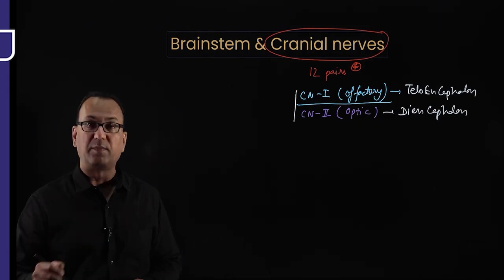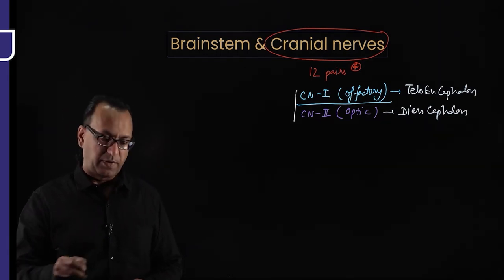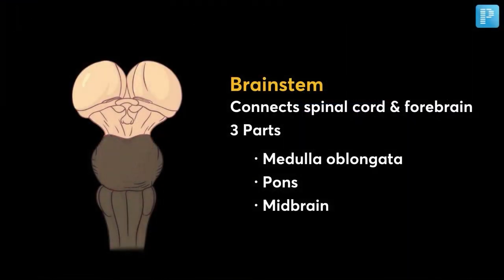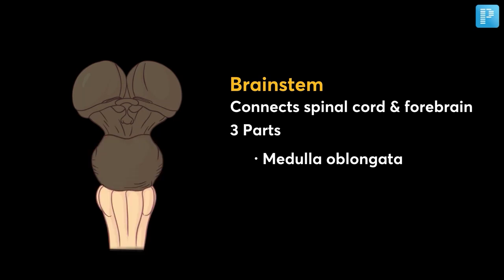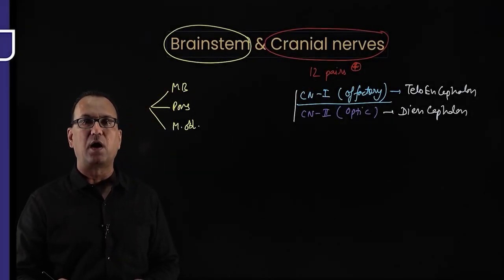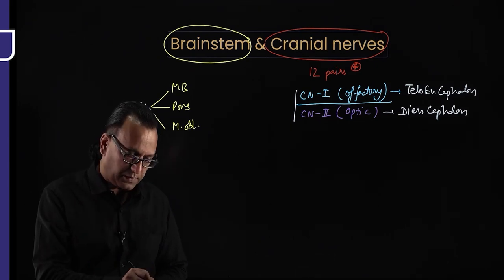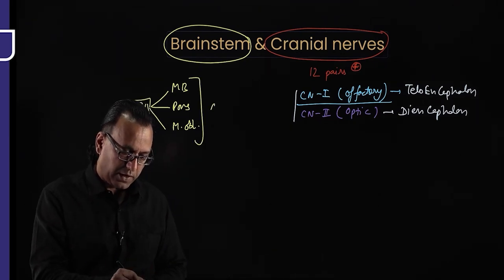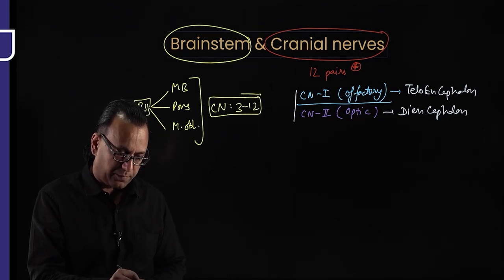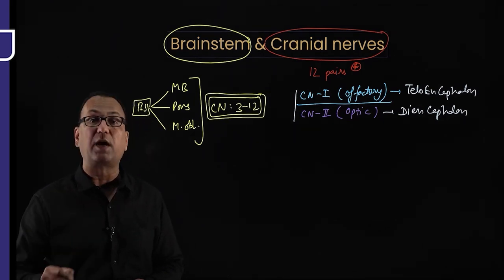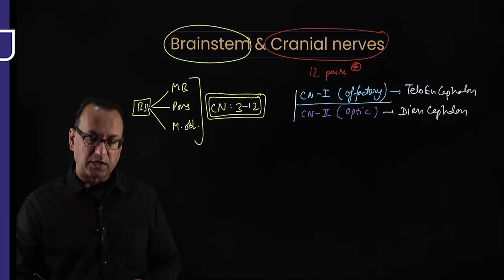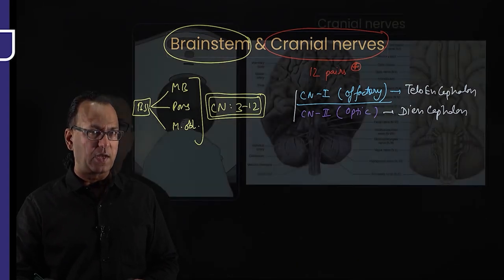The brainstem has three components: the midbrain, the pons, and the medulla oblongata. From these, cranial nerves 3 to 12 arise. Our discussion will be chiefly based on cranial nerves 3 to 12 and their nuclei, but we can briefly discuss cranial nerves 1 and 2 as well.